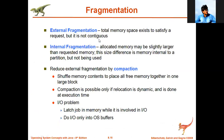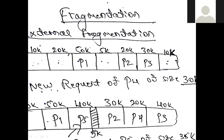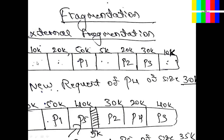Internal fragmentation: we're allocating 35K in a space of 40K, so 5K remains in that particular hole — that 5K memory wastage is internal fragmentation. External fragmentation: all memory spaces are available but not in a continuous fashion. Even though memory is available, we're not able to satisfy the 30K request because it's scattered — that wastage is external fragmentation.